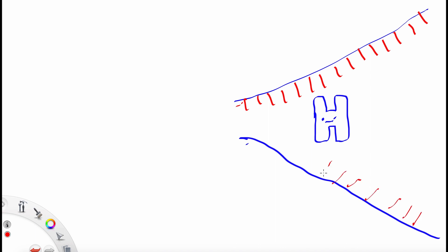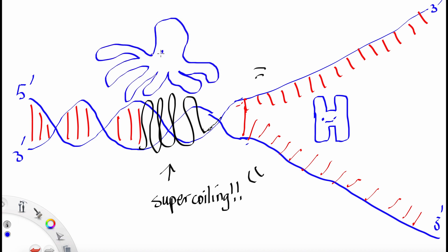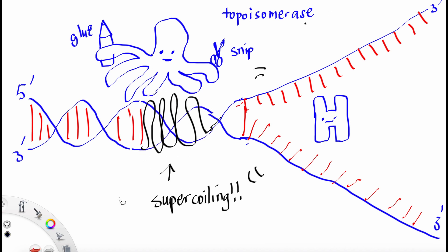What's happening downstream of the helicase? Well, helicase is unzipping a double helix. And when this happens, it causes a supercoiling of the strand. So topoisomerase must relieve the pressure. It does this by snipping and gluing the phosphodiester links to relieve the pressure on this helix.